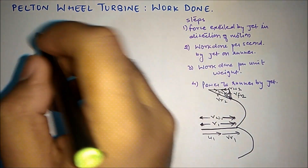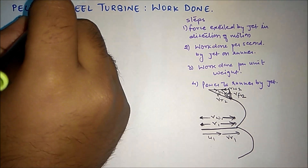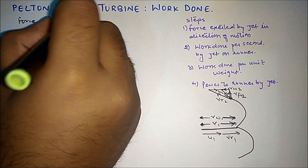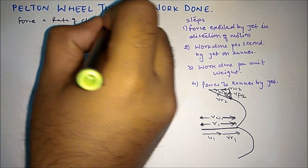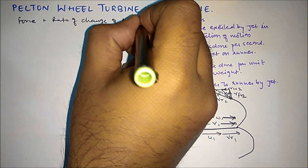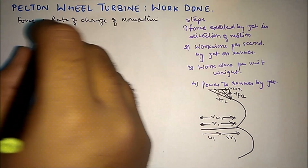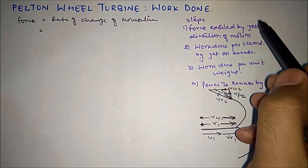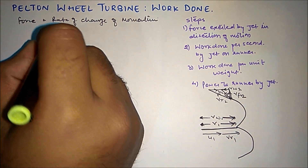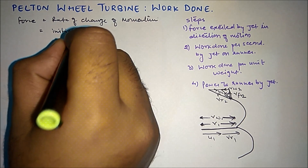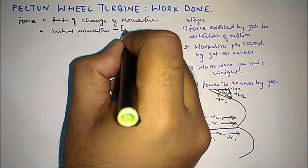The first step is the force exerted by the jet in the direction of motion. We know that force is the rate of change of momentum — that is Newton's second law of motion. As we are finding the force exerted by the jet on the blade, we will take initial momentum minus final momentum.